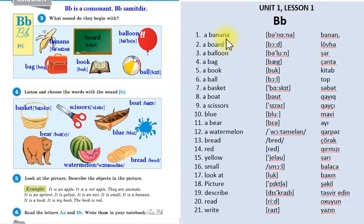Banana - banan, boat, balloon - şar, bag - çanta, a book - kitab, a ball - top, a basket - səbət, a boat - gəmi, scissors - qayçı, blue - mavi, a bear - ayı, a watermelon - qarpız, bread - çörək. Burada səhv olub, qarpız olmalıdır.